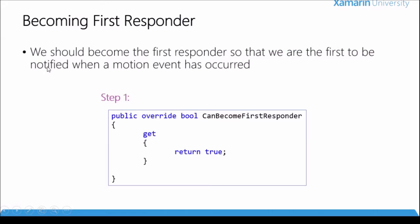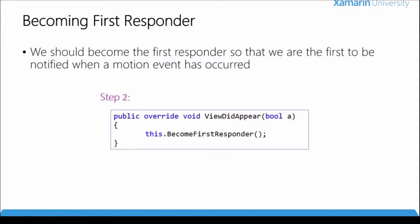The next thing we need to do is become the first responder. The first person to get notified is the first responder, so that's how we should go about doing this. First, we override the 'canBecomeFirstResponder' property and return true. Second, inside 'viewDidAppear', we call 'BecomeFirstResponder' to request to become the first responder. Third, in 'viewDidDisappear', we call 'ResignFirstResponder' to say that when this page goes away, we're not the first responder anymore.